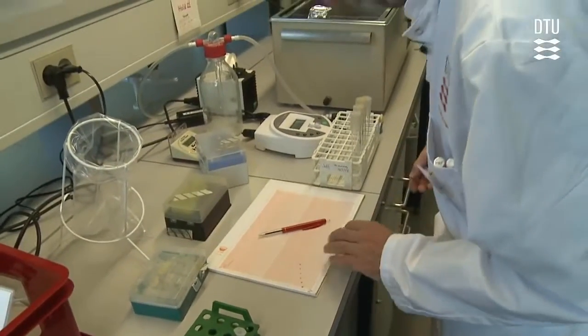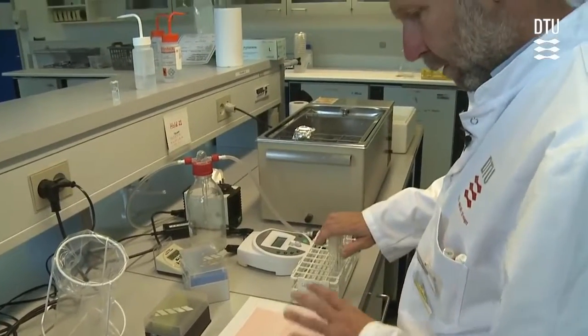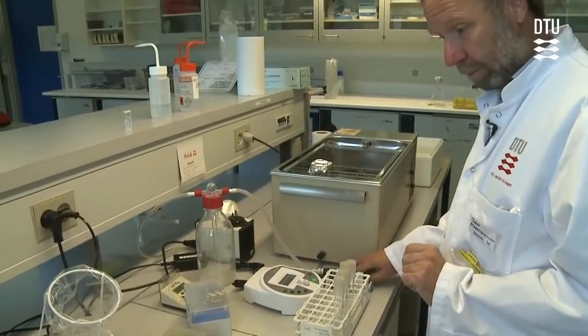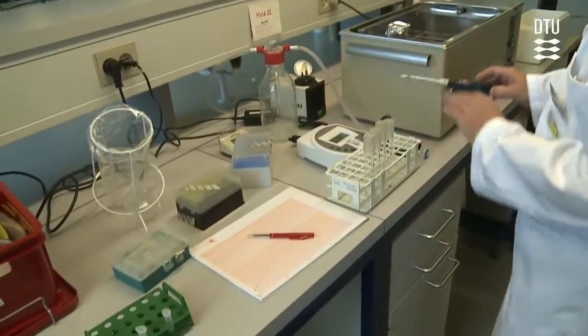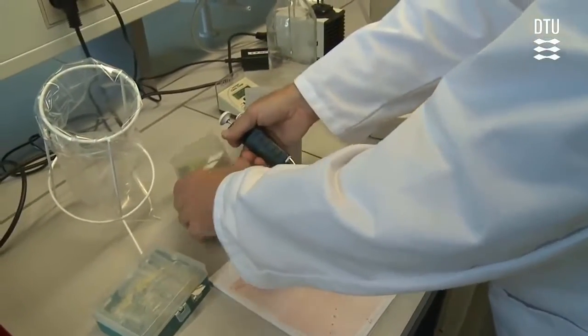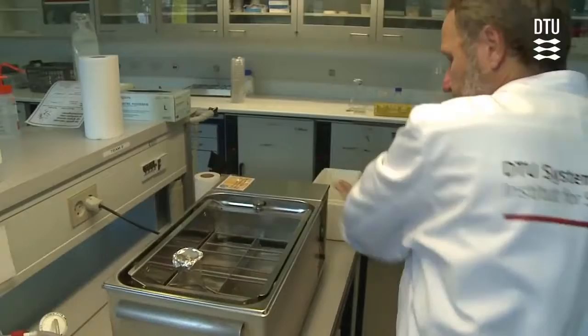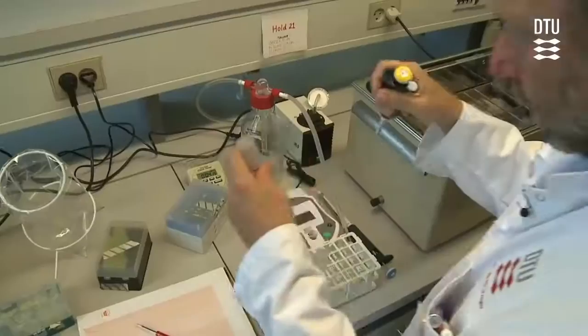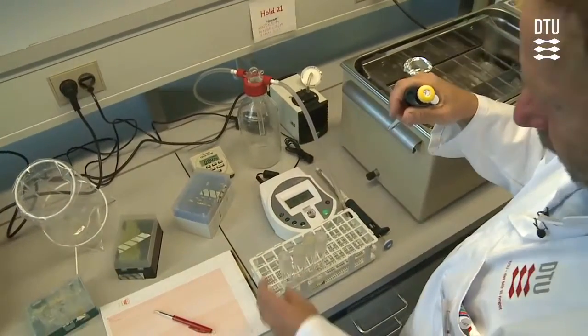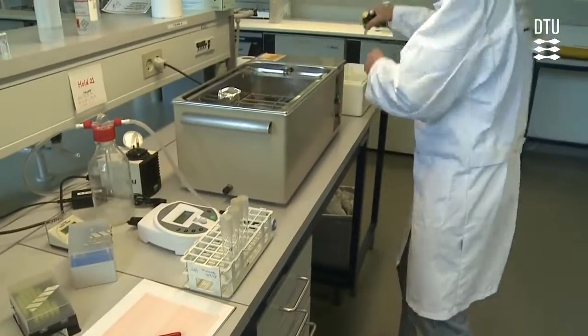We have now reached an optical density of 0.3, so it's time to add the penicillin. But before we do that, we have to take a sample and determine the density of the culture, or the CFU in the culture. We take a sample of 0.1 milliliter from the culture and add that to a 10 milliliter dilution tube. From that we then dilute the sample and plate at the proper dilution.